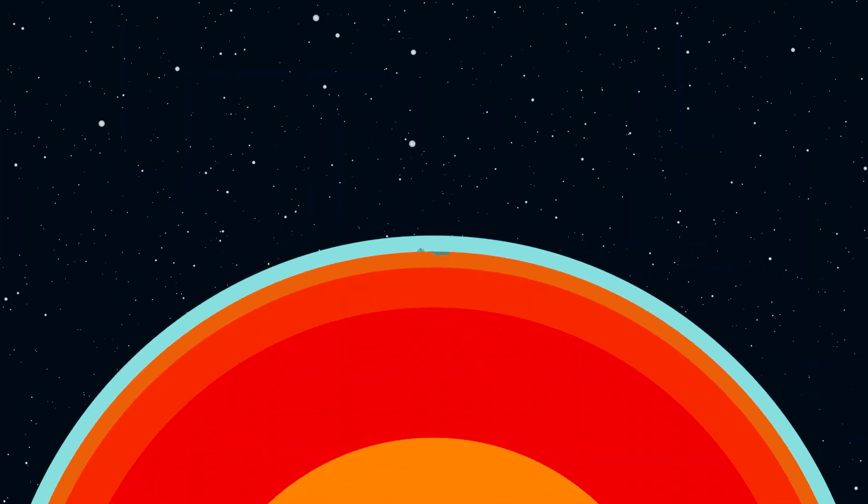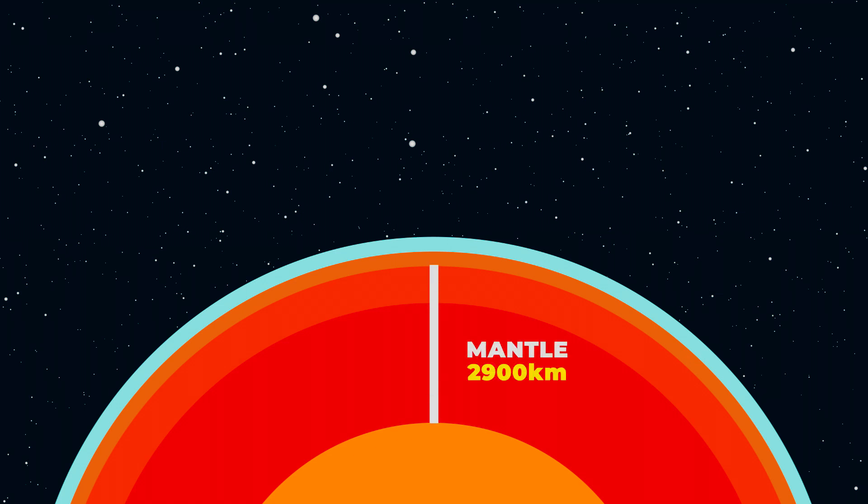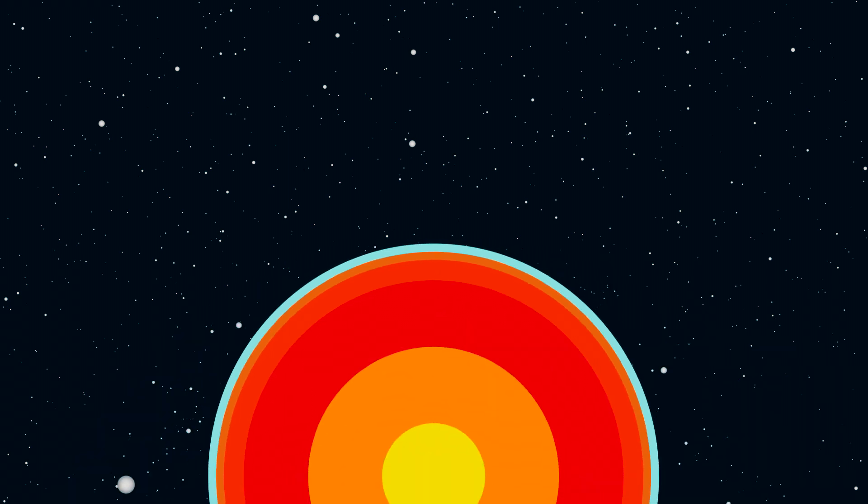Below the crust is the mantle, which is about 2,900 kilometers. The mantle is of upper mantle and the lower mantle. Below the mantle comes the core.